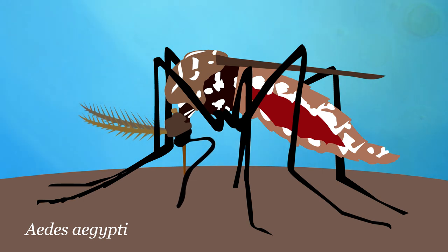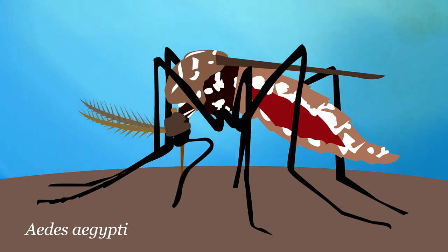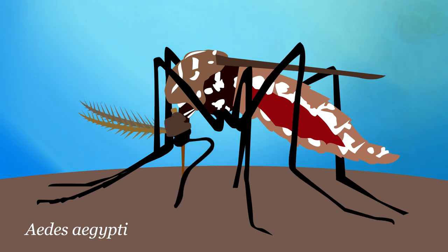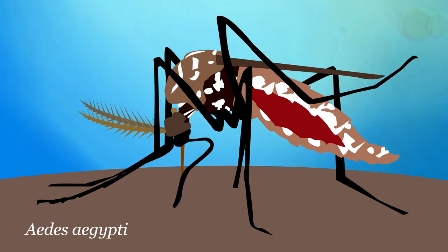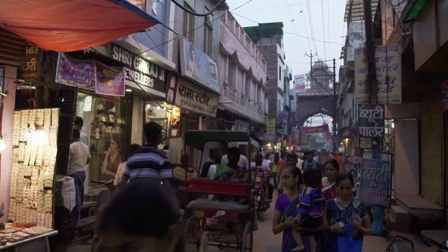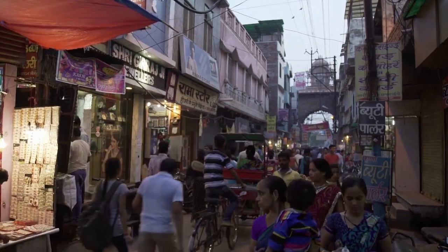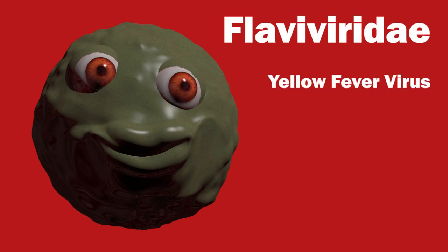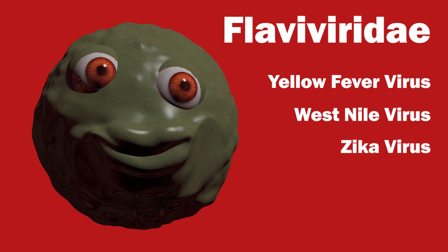The Dengue virus is transmitted to humans by the mosquito Aedes aegypti and is a major cause of disease in tropical and subtropical regions. The virus belongs to the family Flaviviridae, which includes viruses such as yellow fever virus, West Nile virus, and Zika virus.